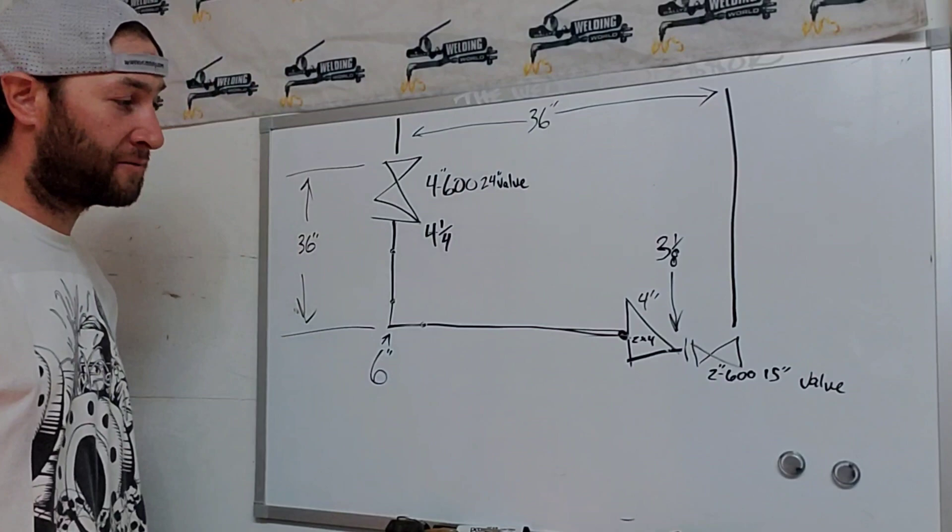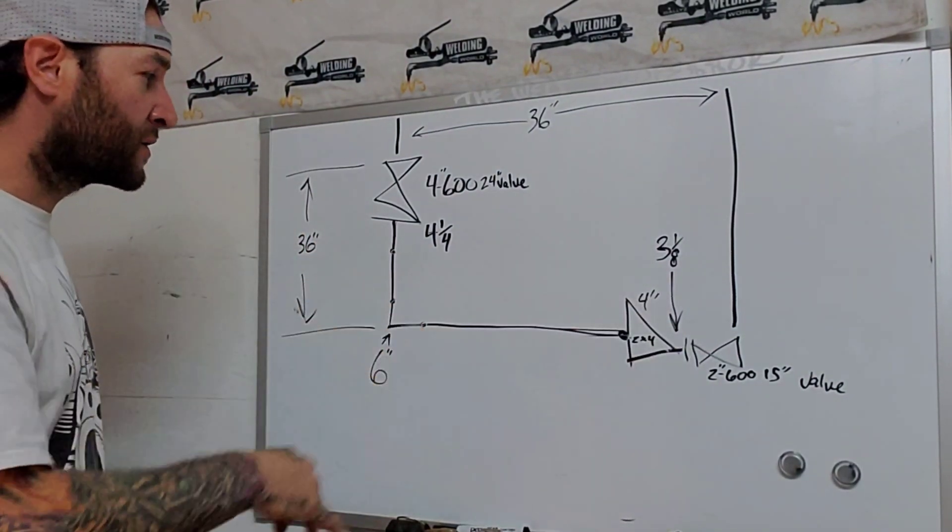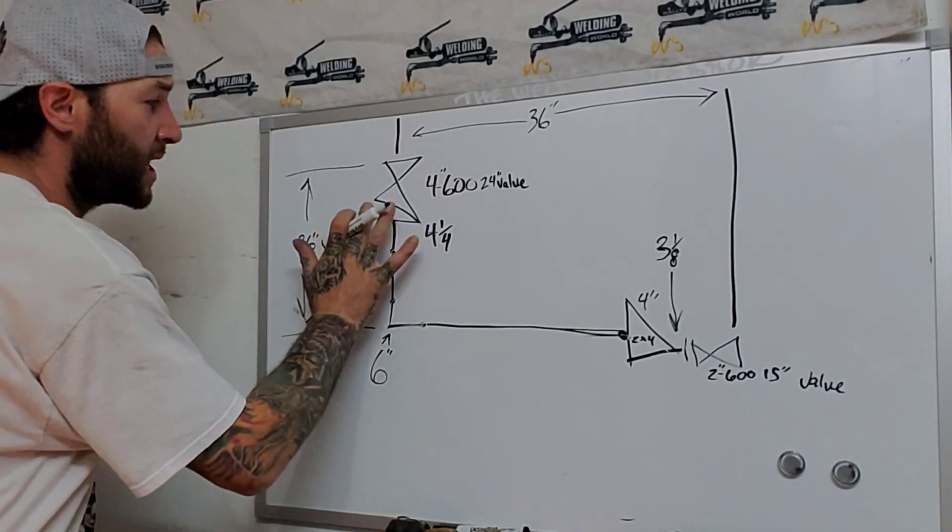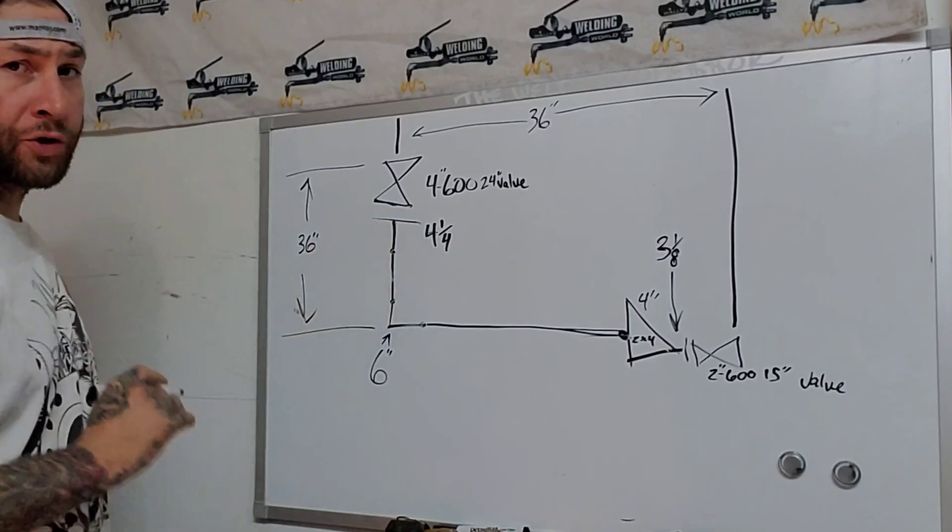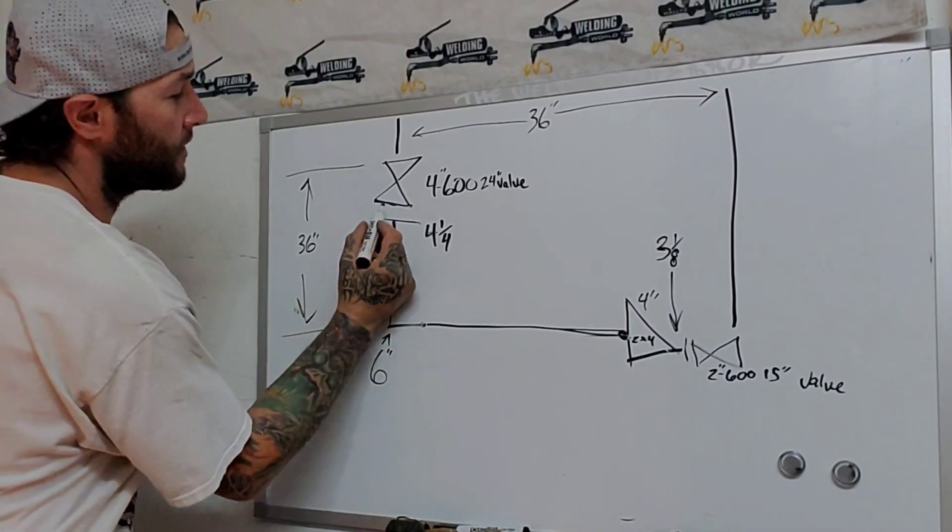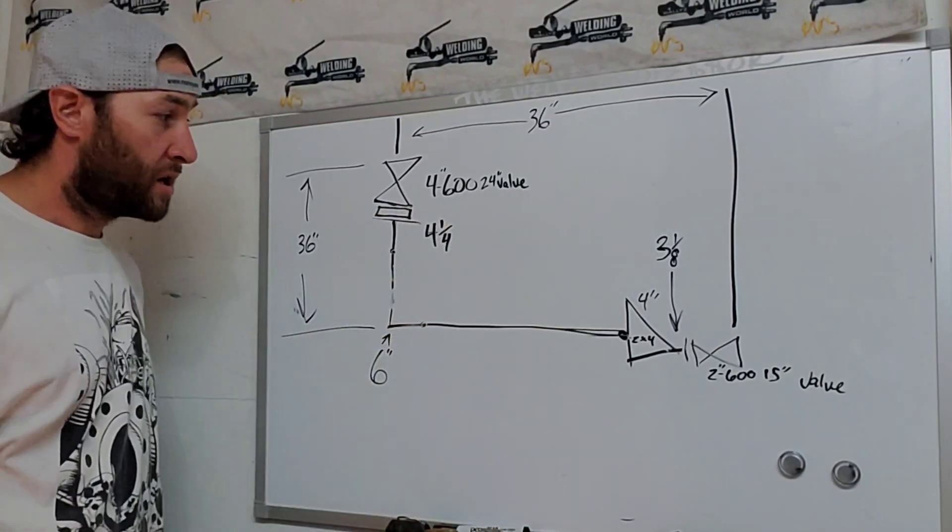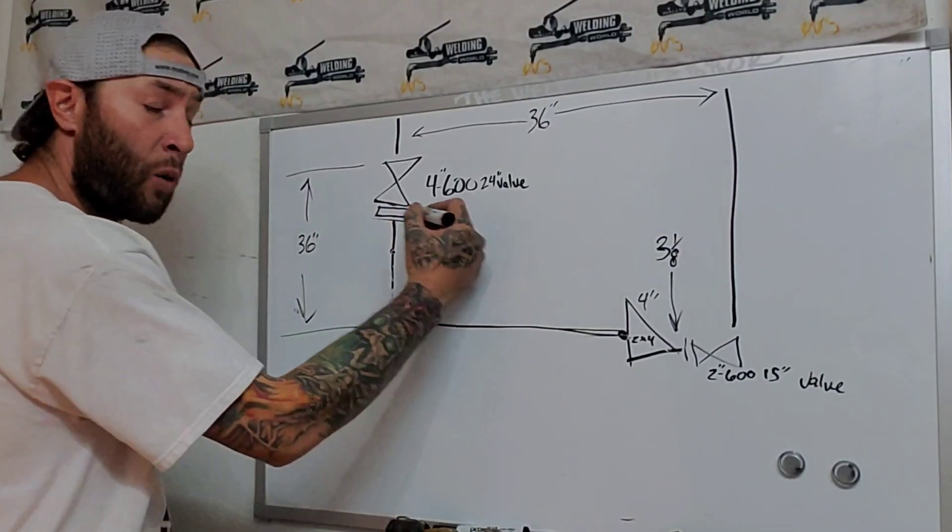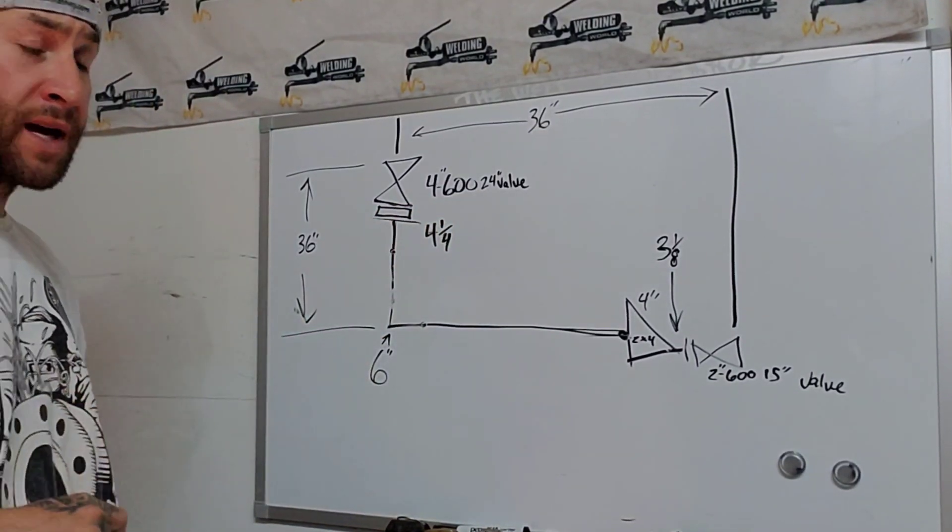So we now know that those are our measurements for our fittings, our valves. Now there's one more thing that you need to take into consideration. Either if there's a bleed ring in there or just a gasket. A bleed ring sometimes will be a different measurement and it will look like that. So say you have a 1-inch bleed ring right here. We're going to throw a 1-inch bleed ring in here.